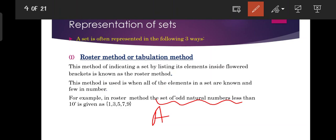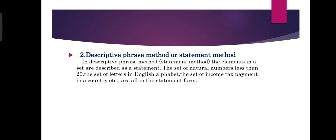Using the Roster Method, the set of odd natural numbers less than 10 is written as A = {1, 3, 5, 7, 9}, listing all elements inside curly brackets.